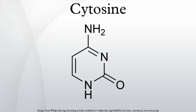Cytosine is one of the four main bases found in DNA and RNA, along with adenine, guanine, and thymine. It is a pyrimidine derivative, with a heterocyclic aromatic ring and two substituents attached. The nucleoside of cytosine is cytidine.